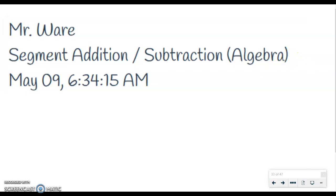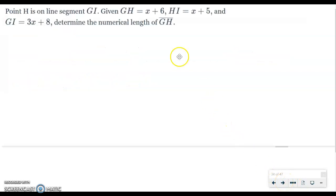Let's take a look at this example. It says point H is on line segment GI, given GH is equal to X plus 6, HI is equal to X plus 5, and GI is equal to 3X plus 8. Determine the numerical length of GH.